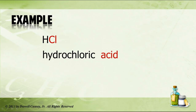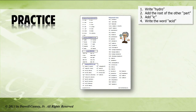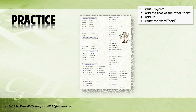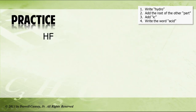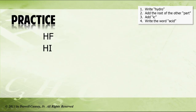If you need to review that, rewind and go through it again. Here's some practice — and remember to refer to your polyatomic ion sheet. HF: the root is fluor, so hydrofluoric acid. And for iodine, the root is iod, so hydroiodic acid.